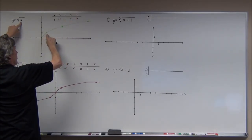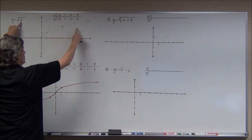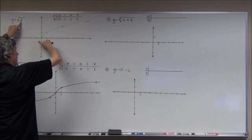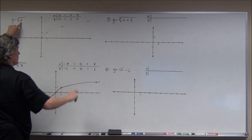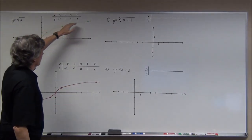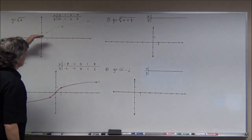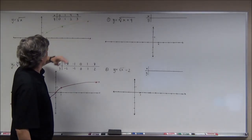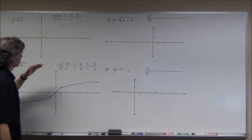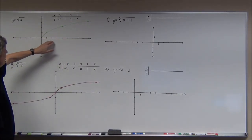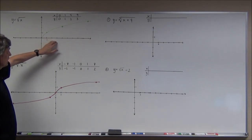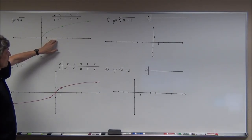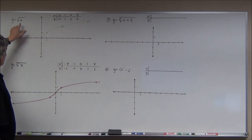You see them here: (0,0), (1,1), (4,2), and (9,3), and I get a bit of a curve that's going to go on forever to the right. It doesn't flatten out — it keeps going upward but slows down how fast it goes upward. It looks like half of a parabola on its side. That's the square root function — that's the parent graph.